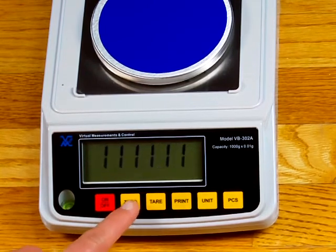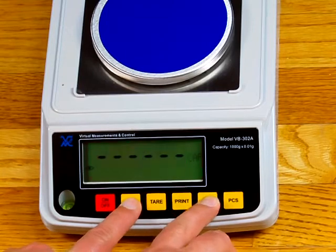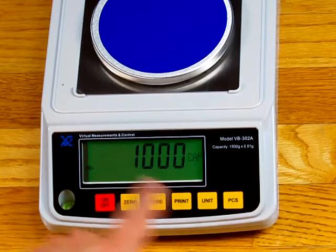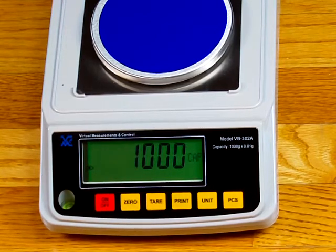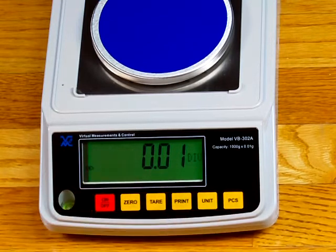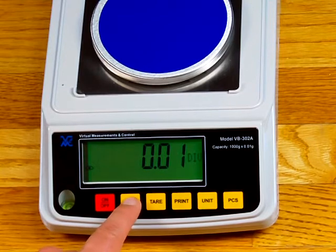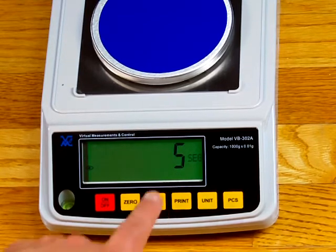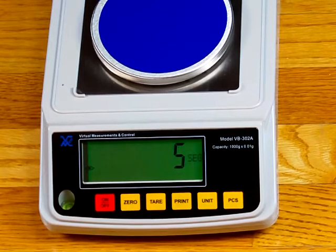So once we're there, we press the 0 and the unit key simultaneously. It shows 1,000. That's 1,000 for 1,000 gram capacity. One presses the 0 key. It's showing you the division is to 0.01 gram. Press the 0 key again. And here, it says 5, and it says over here, SEG. So this is a 5-segment calibration.